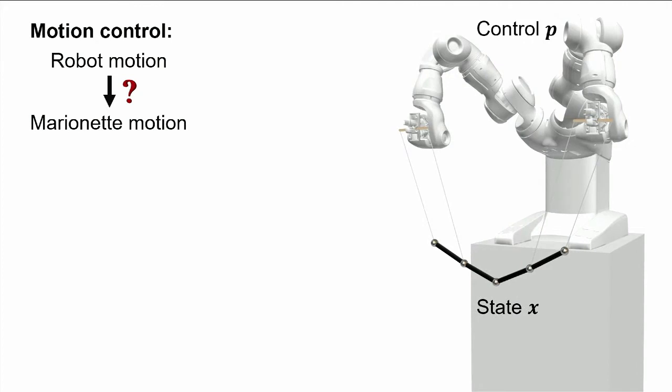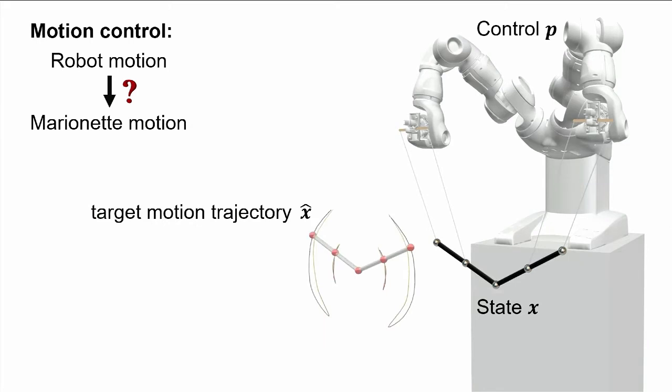Now, the problem we are actually interested in solving is the motion control task, which essentially asks the question, how does the robot actually need to move such that the marionette expresses a desired behavior? Before we can answer that, we first of all need a way of specifying how a desired behavior of a specific puppet looks like. In our case, we do this by designing a target motion trajectory using keyframing, and we denote it by X hat.